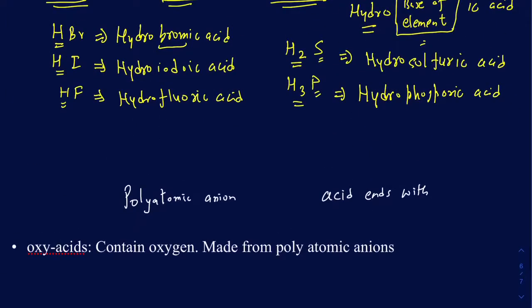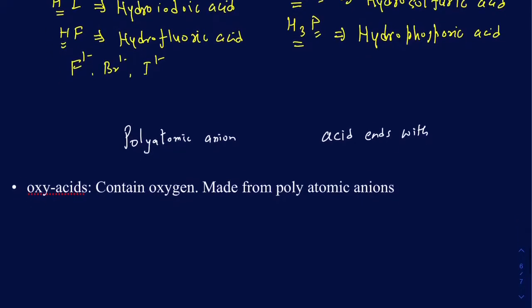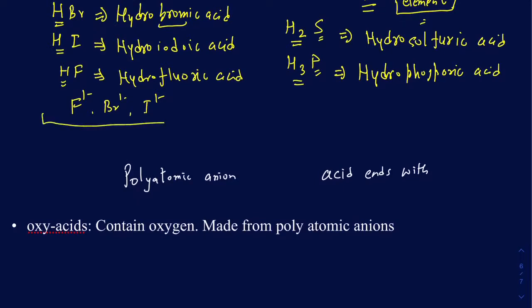It all depends on the charge of the anion. For example, bromine, iodine, and fluorine, when they form ions, they have charges of F1-, Br1-, and I1-. So if it's a 1- charge, you only need one hydrogen to balance out those charges. If you have only one hydrogen, these are called monoprotic acids.